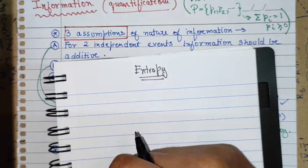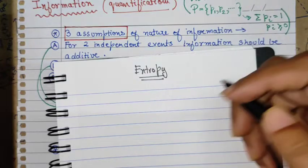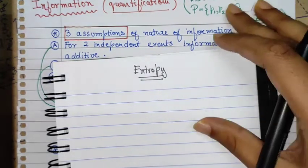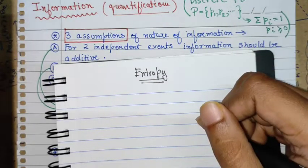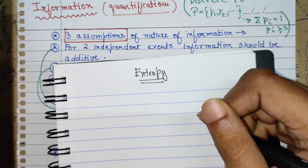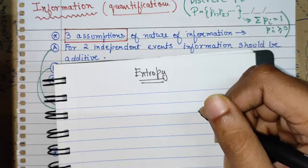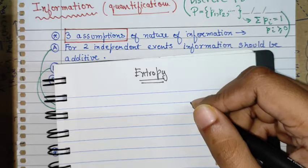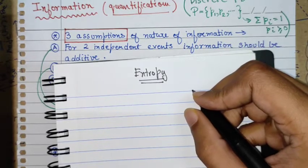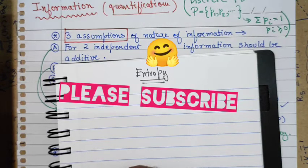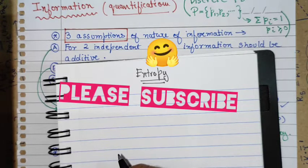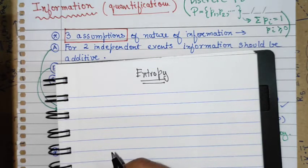Welcome to this video on the topic of quantifying information. We will start with classical information and then discuss some results. I will not give a very rigorous derivation of Rényi entropy, but we will see the intuition it carries. We will also see what Shannon entropy or the Shannon measure is.